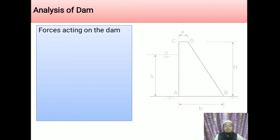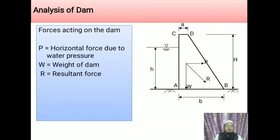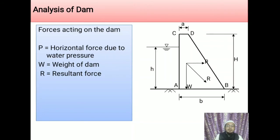The forces acting on the dam are: the self-weight of the dam and the pressure of the water, with the resultant force R of these two. The self-weight W acts downward and the pressure of water P acts laterally — that is, perpendicular to the face of the dam. These two forces W and P may be combined into a resultant force R acting at the base of the dam.